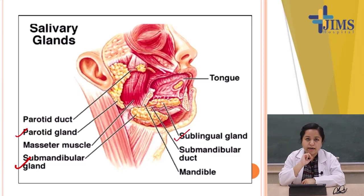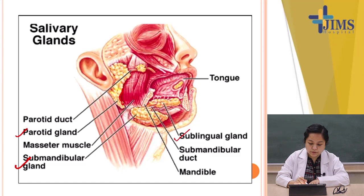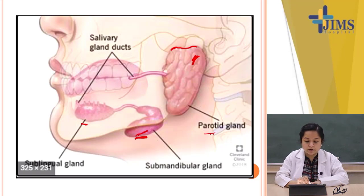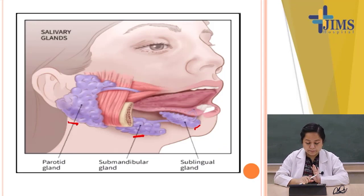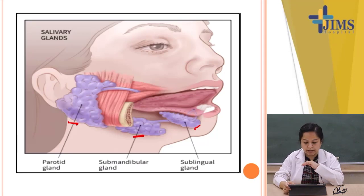Looking at the diagram, the parotid gland is near the ear, the submandibular is below the mandible, and the sublingual is below the tongue.